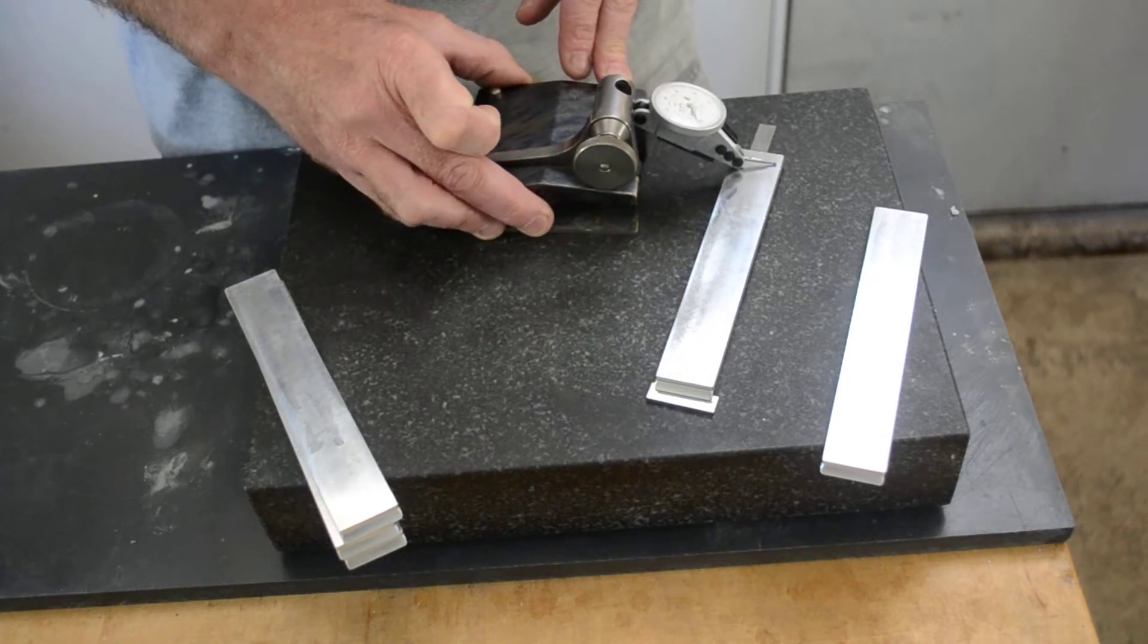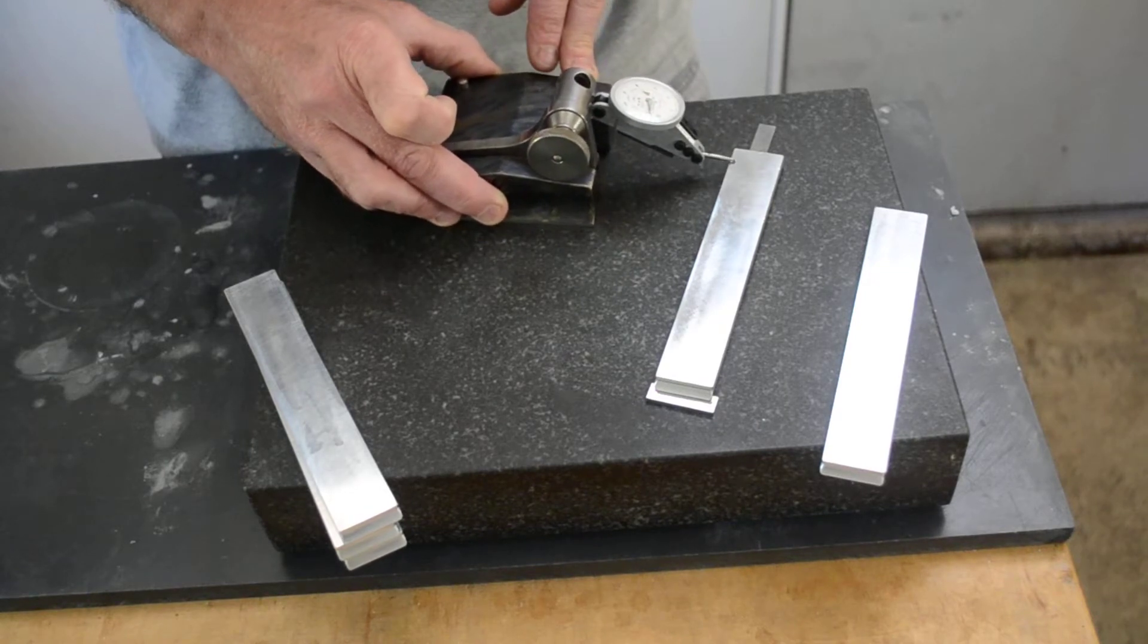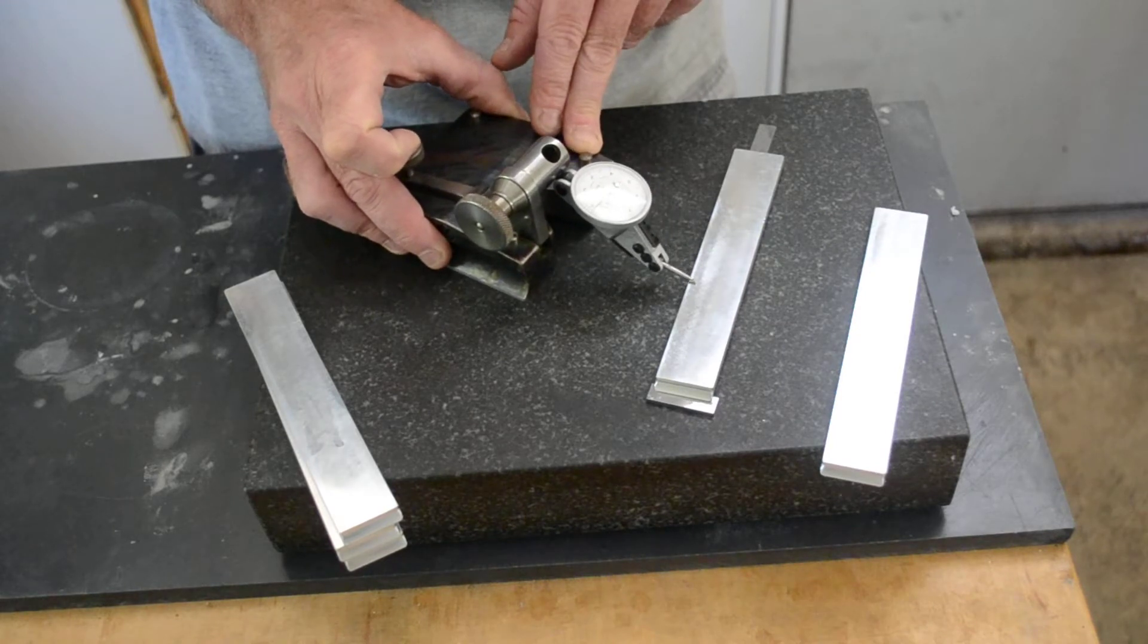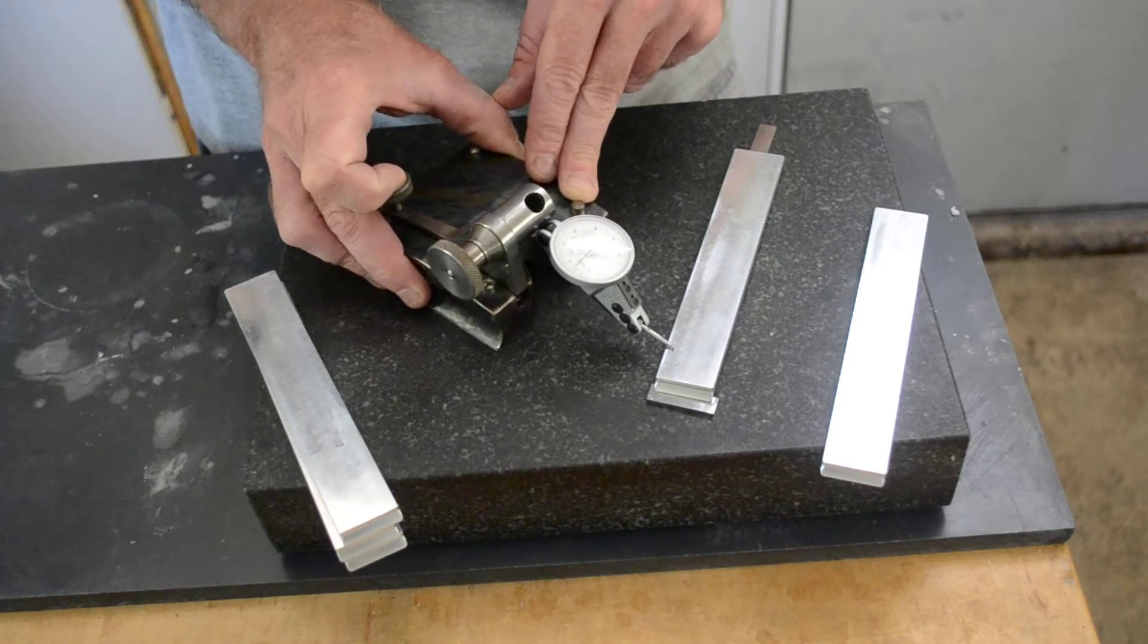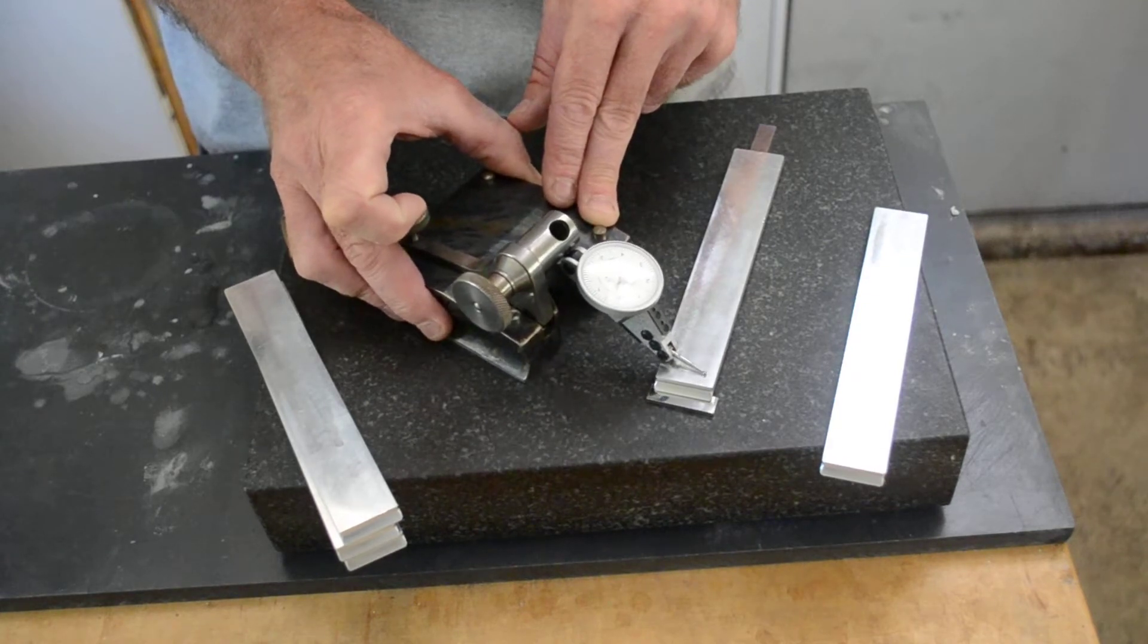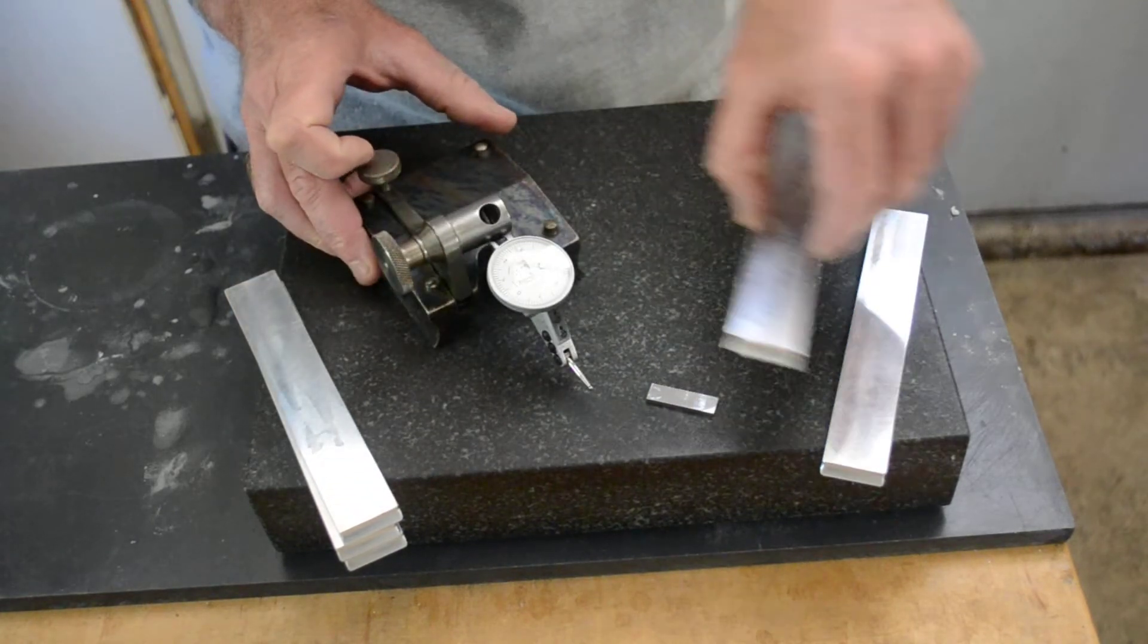So this is six tenths under. Seven tenths under. Eight tenths under. This one is eight, nine tenths out over its entire surface.